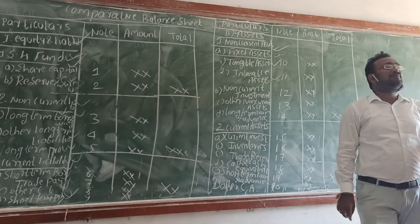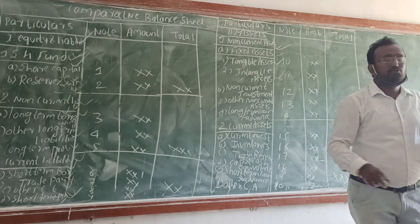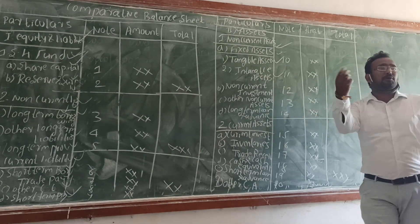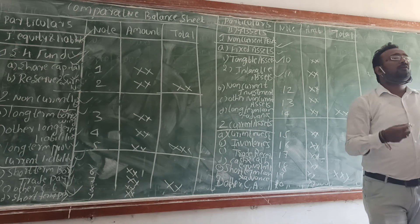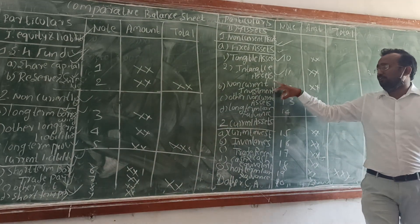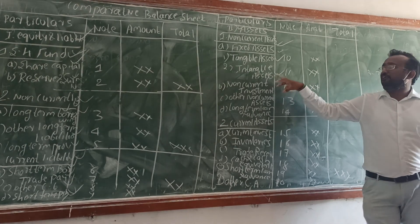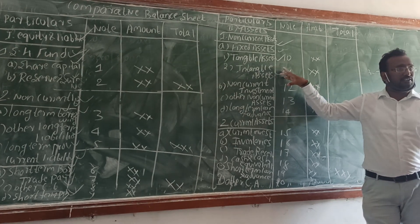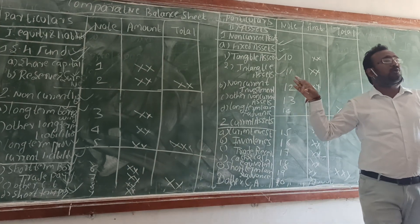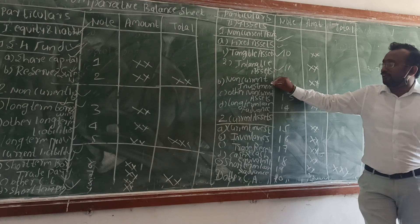In case of intangible asset, popularly goodwill is called an intangible asset. Intangible assets include goodwill, patent, copyright, and trademark. So to summarize: land, building, machinery, and furniture are tangible assets, while goodwill, patent, and copyright are called intangible assets.